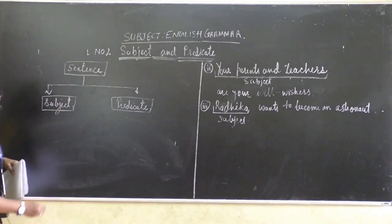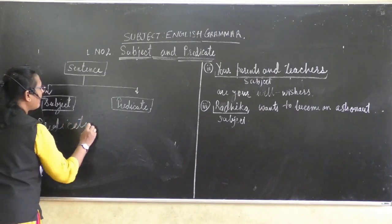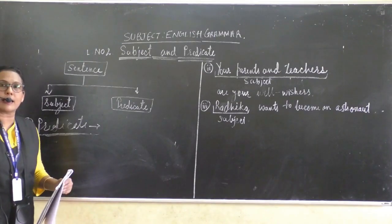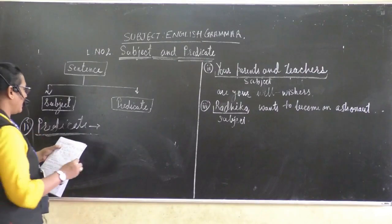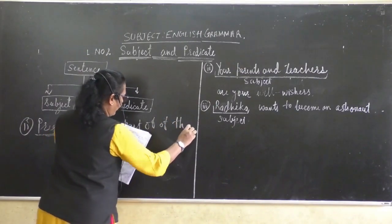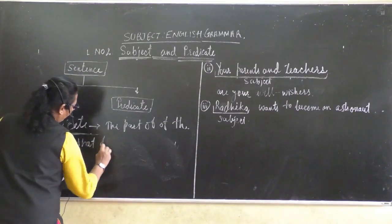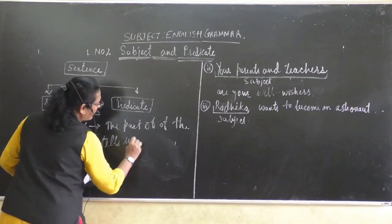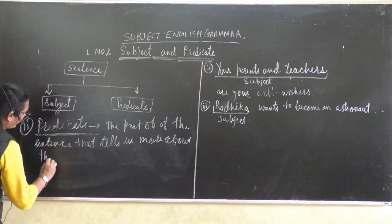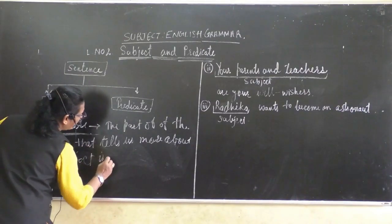We are going to learn the predicate. The second part is predicate. What is the definition of predicate? The definition of predicate: the part of a sentence that tells us more about the subject is called the predicate.